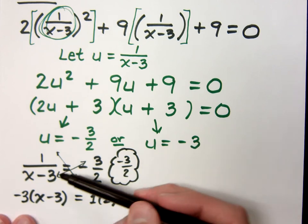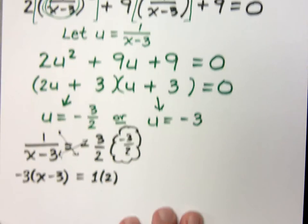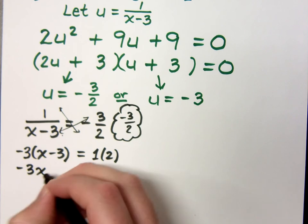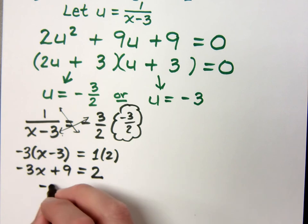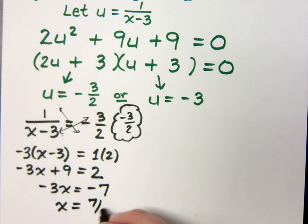So we went from something that was rational to something that looks to be linear. So let's solve this. I get negative 3x plus 9 is equal to 2. Move that 9 over, so I get negative 7. And when I finish this guy, I have positive 7 thirds.